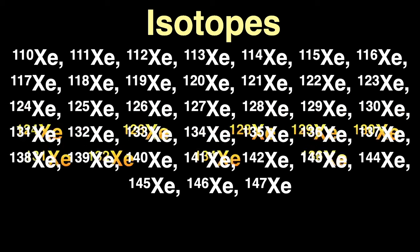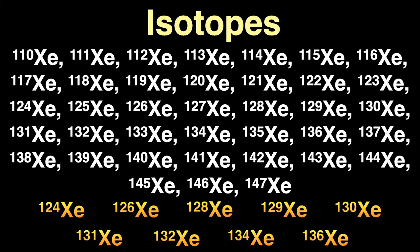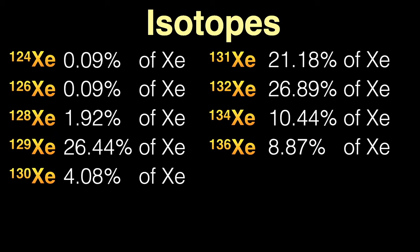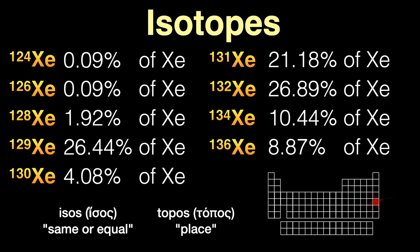There are 38 isotopes of xenon, and of these there are nine stable non-radioactive isotopes. These nine stable isotopes are found in different proportions in nature, from less than a tenth of a percent to almost 27%. By the way, the word isotope comes from the Greek isos meaning same or equal, and topos meaning place, since all these various forms of xenon occupy the same place in the periodic table.